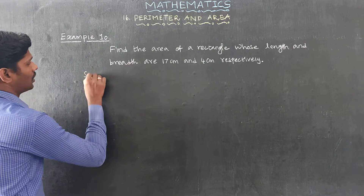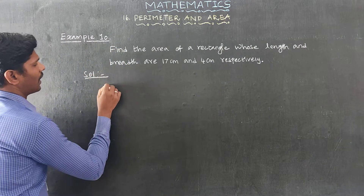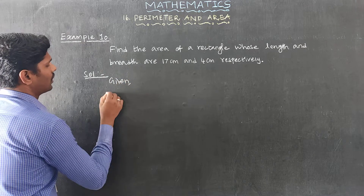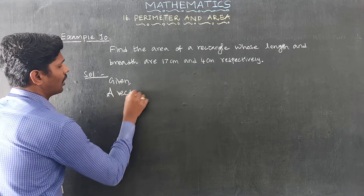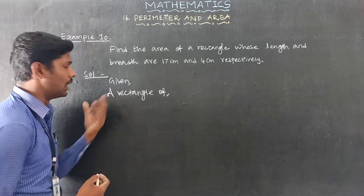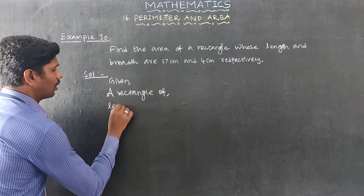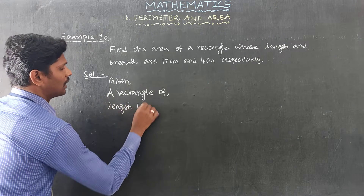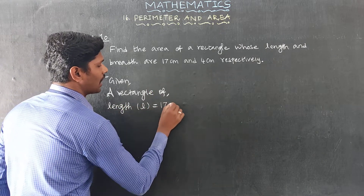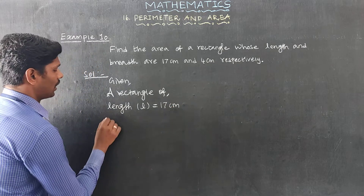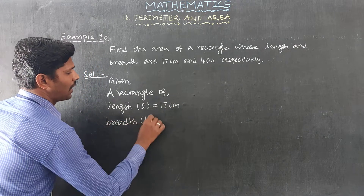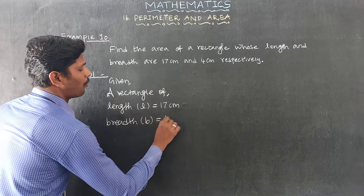Solution. Given a rectangle, for a rectangle: length L equals 17 cm and breadth B equals 4 cm.